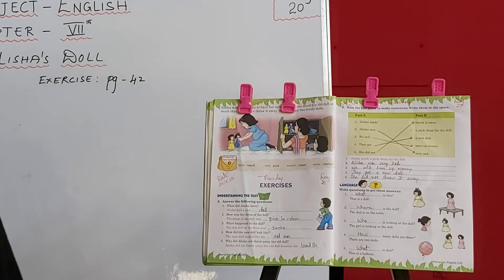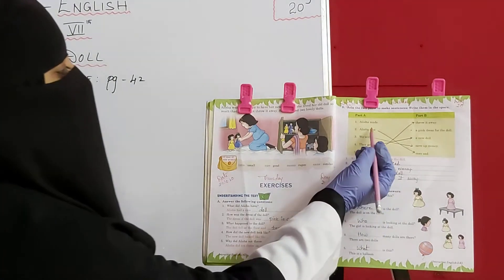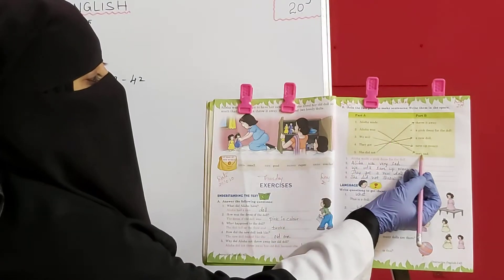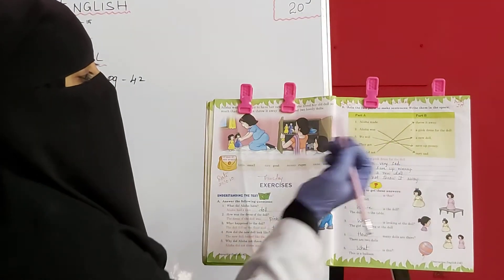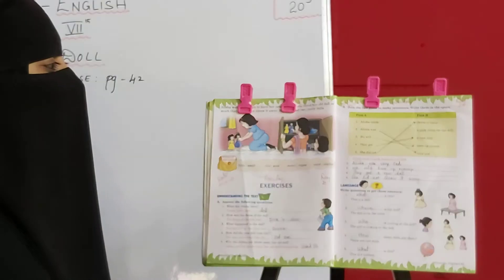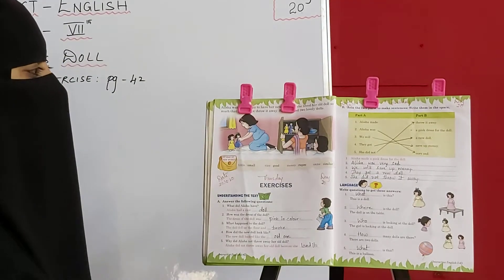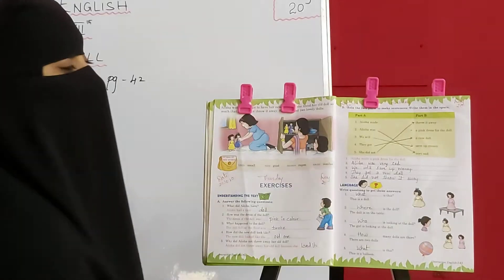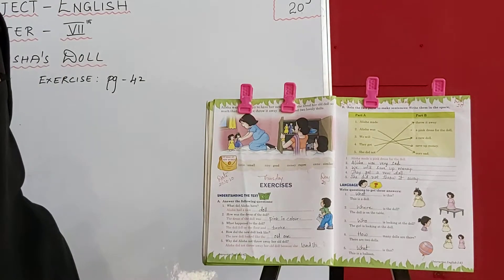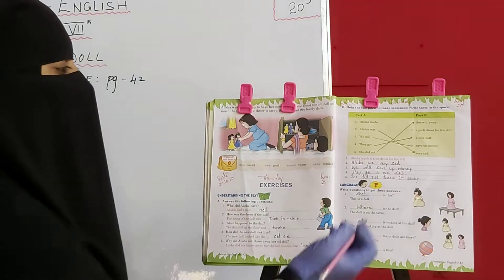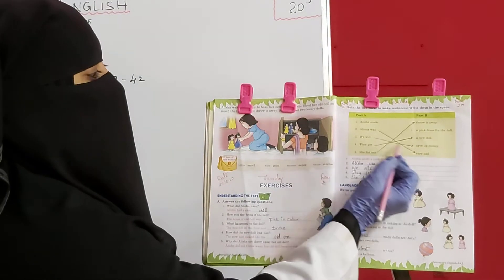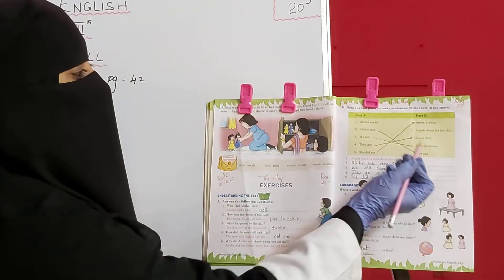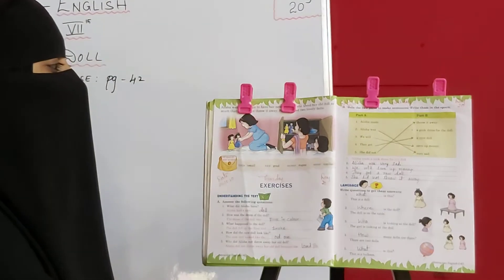Match it up. Alicia was very sad. Then next one kya hai? We will — unki mamma ne kya bola? We will save up money. So match it to: save up money. We will save up money.